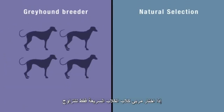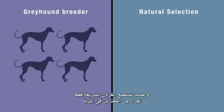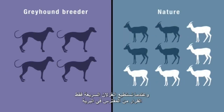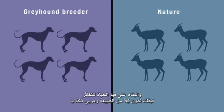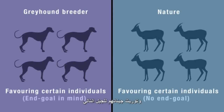If a greyhound breeder selects only the fastest dogs for breeding stock, and in the wild only the fastest gazelles outrun their predators and survive to reproduce, then both nature and the greyhound breeder are favouring certain individuals for reproducing offspring and passing on their genetic information to the next generation.